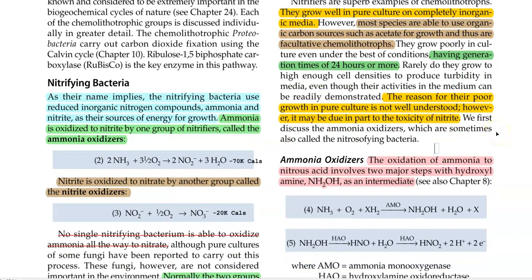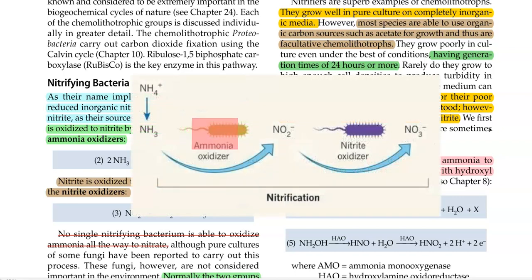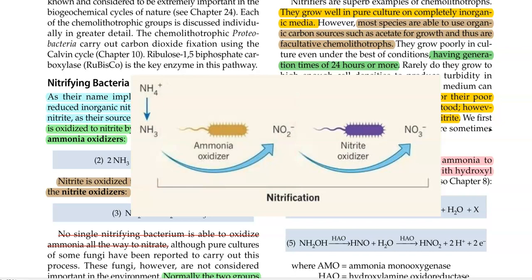In this screencast video lecture, we are going to see about the nitrifying bacteria. This is also an important chemolithotrophic bacteria. As the name implies, these bacteria use reduced inorganic nitrogen compounds such as ammonia and nitrite as their sources of energy for growth and metabolism. Ammonia is oxidized to nitrate by one group of nitrifiers referred to as ammonia oxidizing bacteria, or ammonia oxidizers.